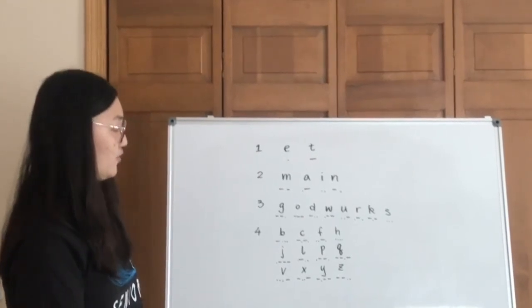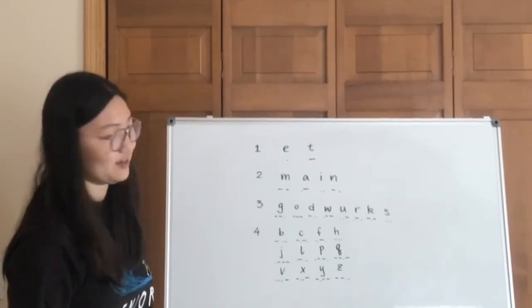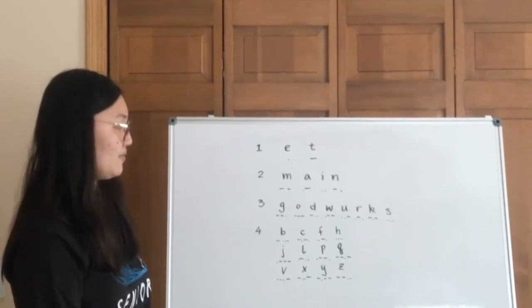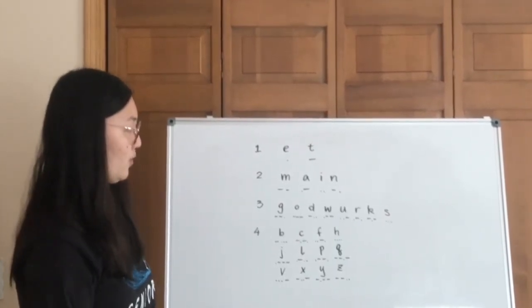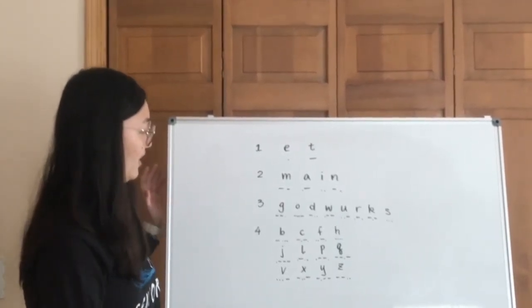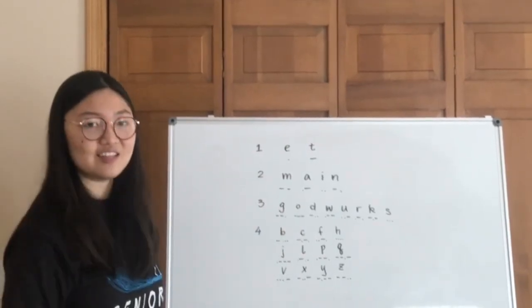And then the remaining letters will be in four with the foursies. So if you can memorize E-T, main, God works, if you want to do that, those will be the ones, accordingly or respectively, that will have one, two, and three.